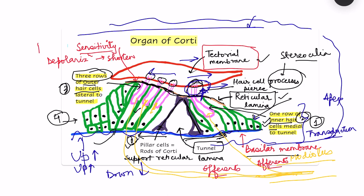When outer hair cells depolarize, they actually shorten in length due to a motor protein within them called Prestin. At resting state, without depolarization, or with hyperpolarization, they lengthen. When they shorten it makes the structure stiffer, so CNS signals reduce the movement of the stereocilia of the inner hair cells. Less signaling causes lengthening, thus changing the sensitivity of the inner hair cells' response.